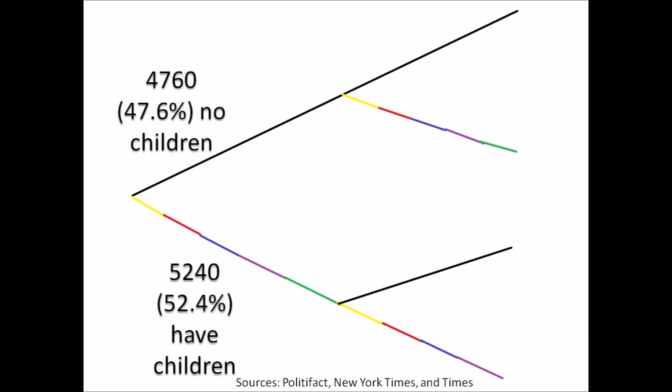So next up on the chopping block is the wage gap. Let's look at how it's distributed among women. Once again, let's interview 10,000 people — they're all going to be hypothetical women, and we're going to investigate their wage gaps. Let's split these women into two groups: women with and women without children. According to the Times, 47.6% of women don't have children, leaving a slight majority of women with children. Now, PolitiFact determined that after controlling for all possible factors, women without children make 94% of the same amount of money as a man in the same position — meaning she's taking a 6% pay gap solely based on discrimination.